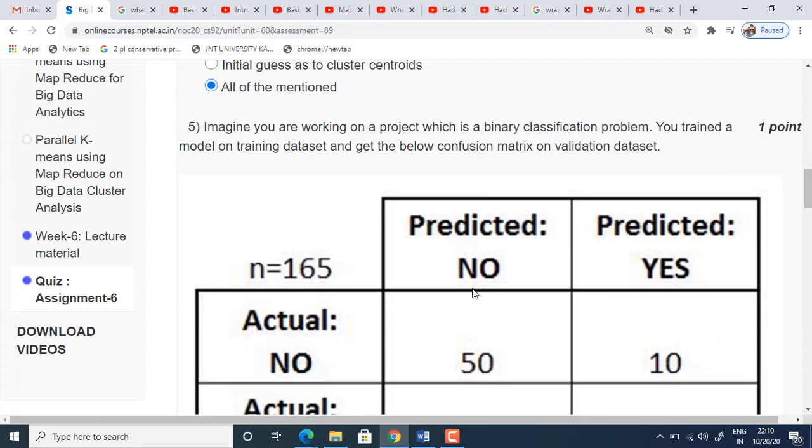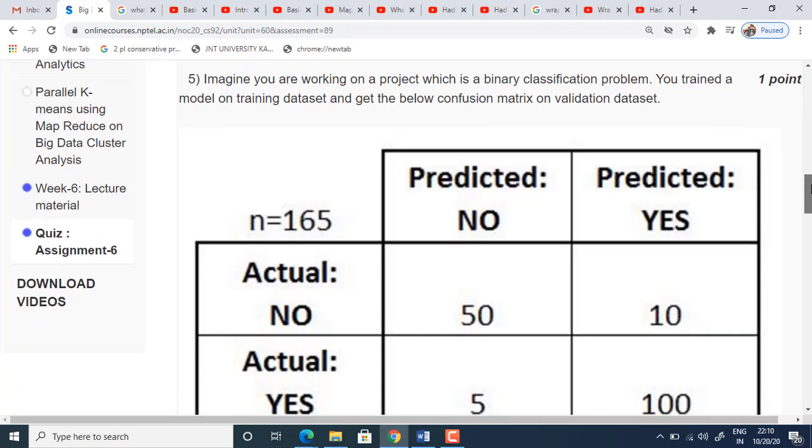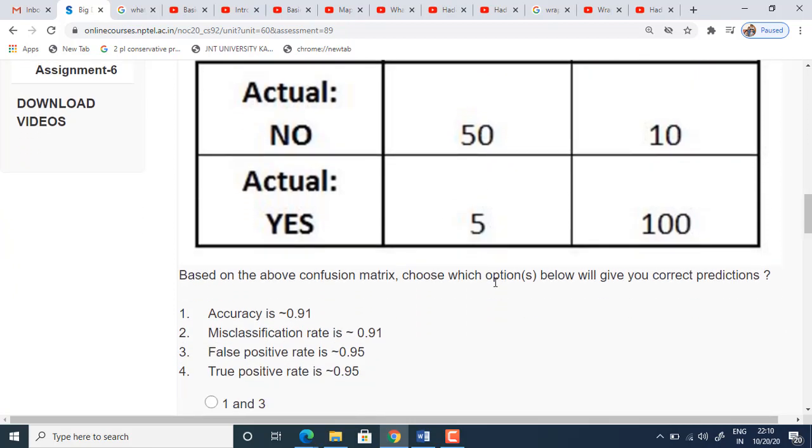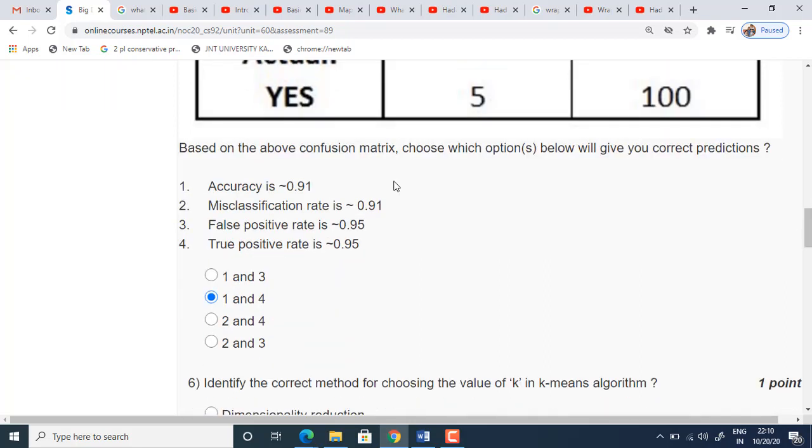Coming to the fifth one, they have given a problem based on some binary classification. It's a binary classification problem. It is a confusion matrix actually. They have given some true positives, true negatives, false positives and false negatives. This is true negative, this is true positive, and this is false positive, and this is false negative. So they have given the values and they are asking to find out some values. Like they have given the accuracy value, they have given false positive rate, they have given true positive rate and we have to check which are all the given measures are correct.